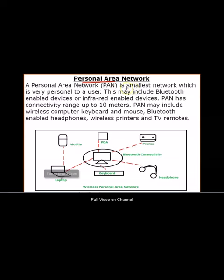PAN is the smallest network, which is very personal to a user. A personal area network is one that a user creates for personal use. This may include Bluetooth-enabled devices or infrared-enabled devices.